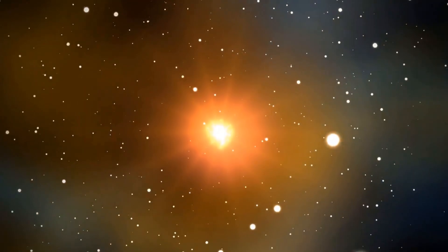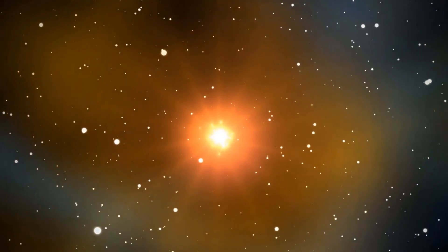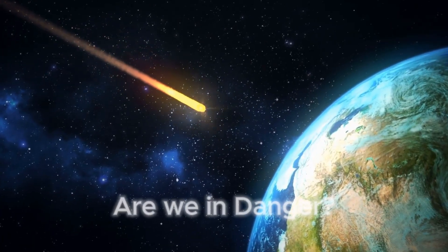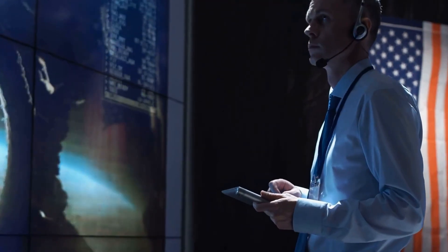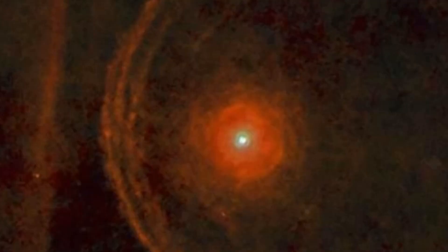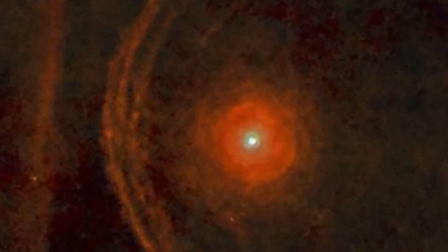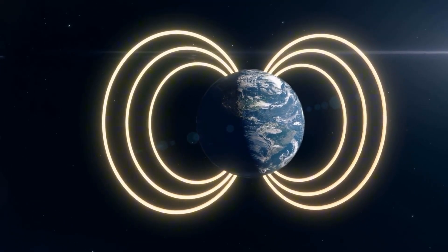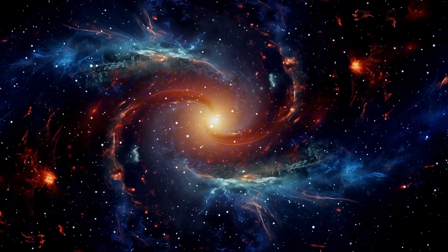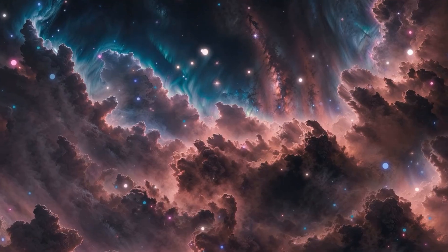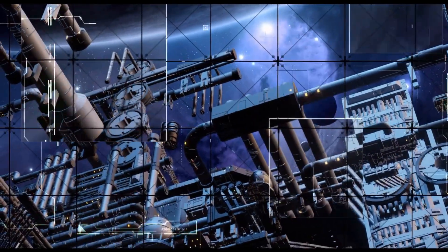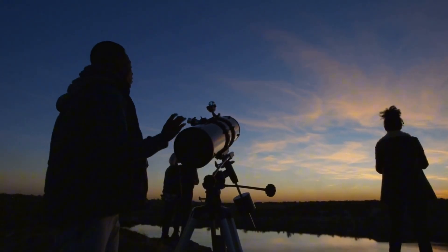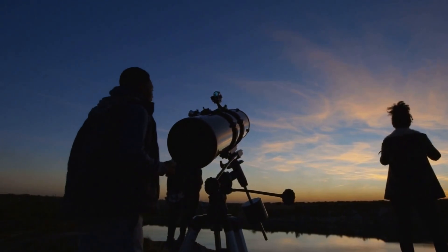With a star exploding this close to Earth, many are wondering, are we in danger? The answer, not directly. Betelgeuse is far enough away to spare Earth from harm. But its explosion will send waves of radiation, gamma bursts, and electromagnetic chaos across light years. These may reshape cosmic dust clouds, shift interstellar structures, and change how starlight reaches us, altering our view of the cosmos forever.